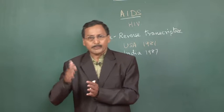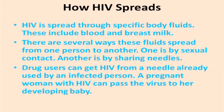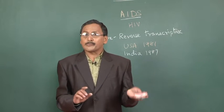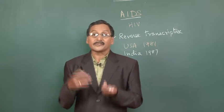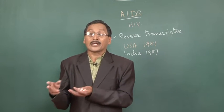Wherever there is a chance of coming in contact with the blood of an infected person, it should be avoided. The different ways of spread include unprotected sex, drug addiction, transmission from a pregnant mother to the child, or use of unsterilized medical equipment.